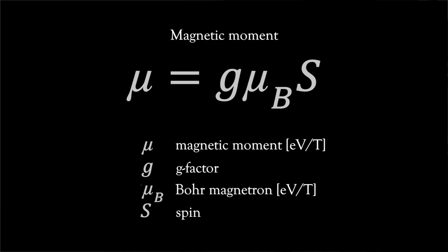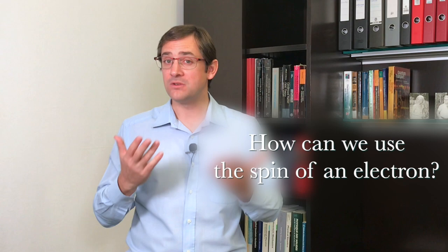Now things become interesting. The electron has a spin but it also has a charge, and the spinning charge creates a magnetic moment. So the electron carries a magnetic moment μ that is directly proportional to its spin angular momentum s, following this formula. Here μ is the magnetic moment expressed in electron volt per Tesla, g is a unitless constant called the g-factor, μ_B is the Bohr magneton in electron volt per Tesla, and s is the spin expressed in units of h-bar. Now that we know what an electron spin is, the next question is how can we use it in real technological applications?